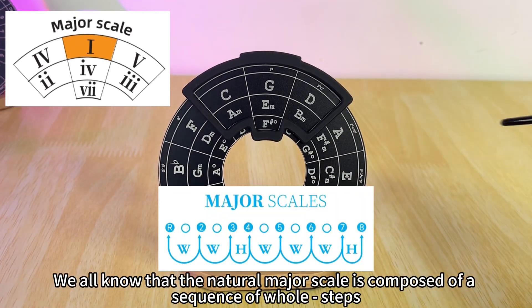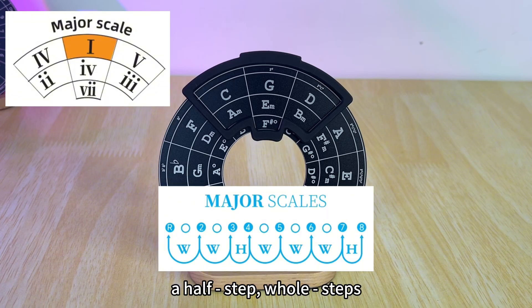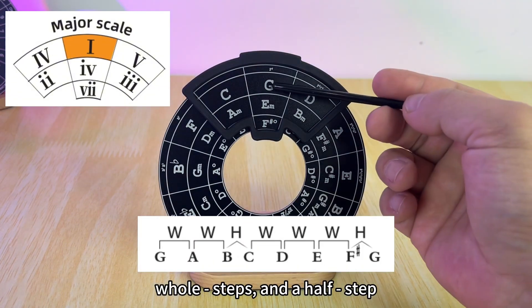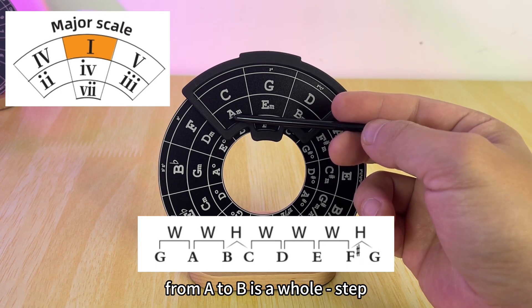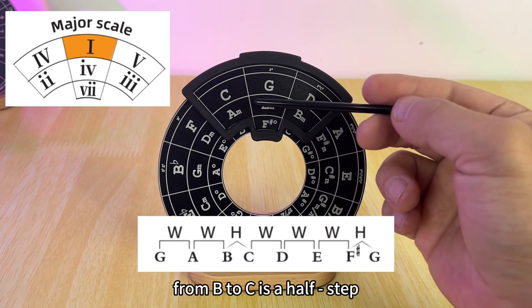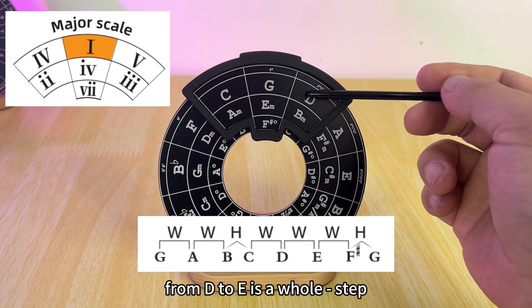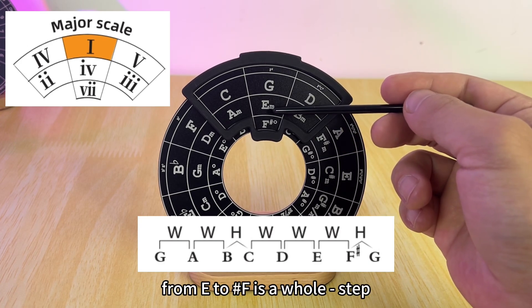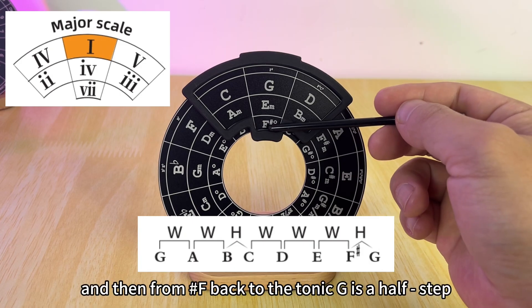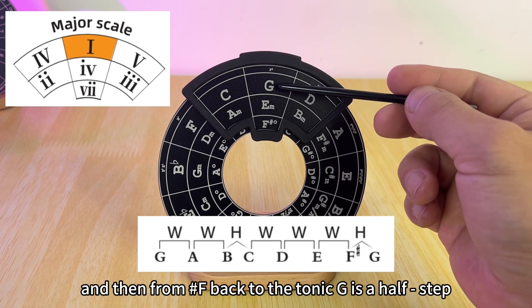We all know that the natural major scale is composed of a sequence of whole-step, whole-step, half-step, whole-step, whole-step, whole-step, and a half-step. That is from G to A is a whole-step, from A to B is a whole-step, from B to C is a half-step, from C to D is a whole-step, from D to E is a whole-step, from E to F sharp is a whole-step, and then from F sharp back to the tonic G is a half-step.